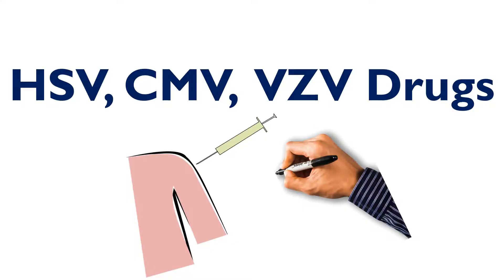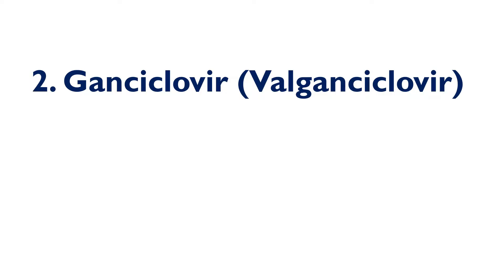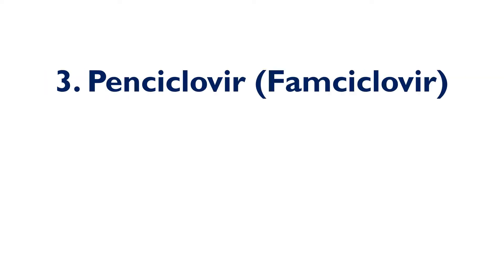This is Step 1 Domination, and we're going to be covering the drugs that treat HSV type 1 and 2, CMV, and VZV today. The drugs we're going to cover are acyclovir with the prodrug valacyclovir, ganciclovir with the prodrug valganciclovir, penciclovir with the prodrug famciclovir, foscarnet, and cidofovir.